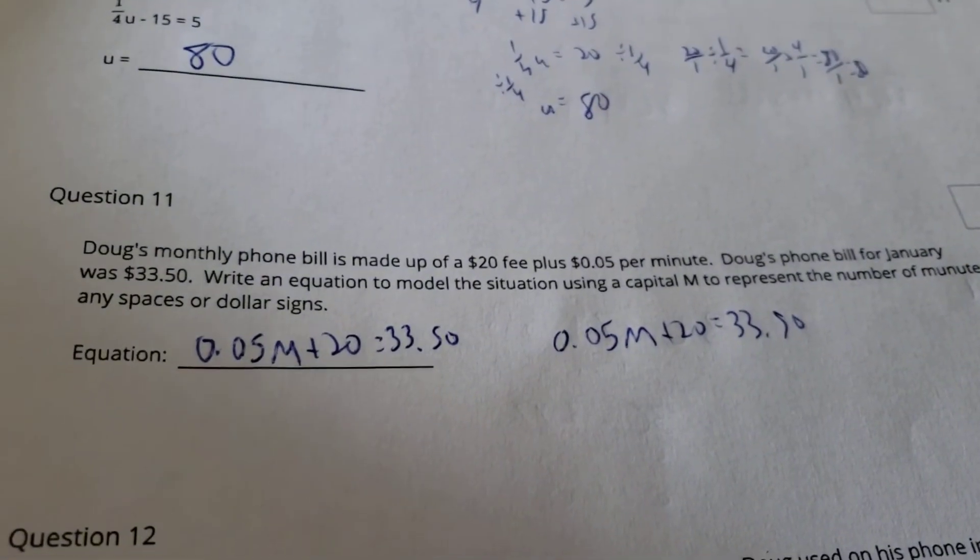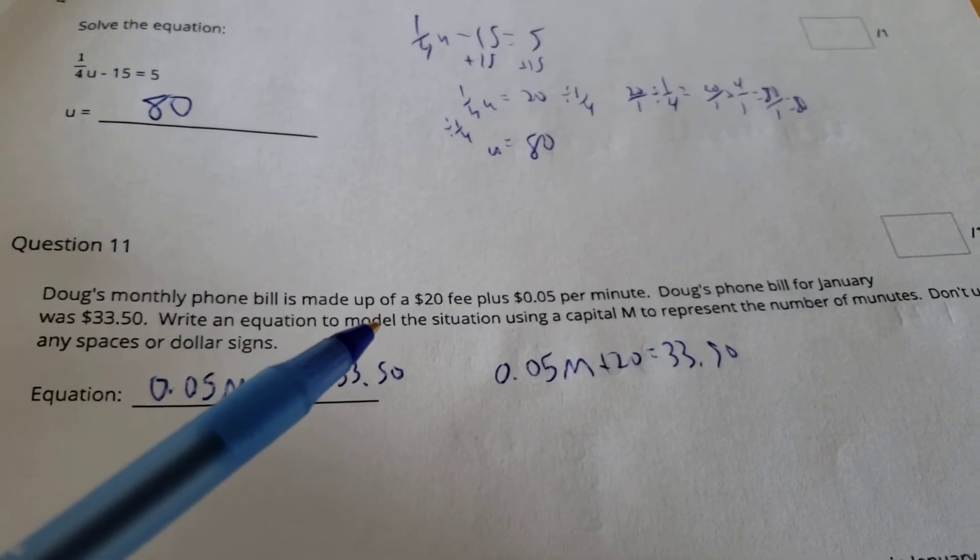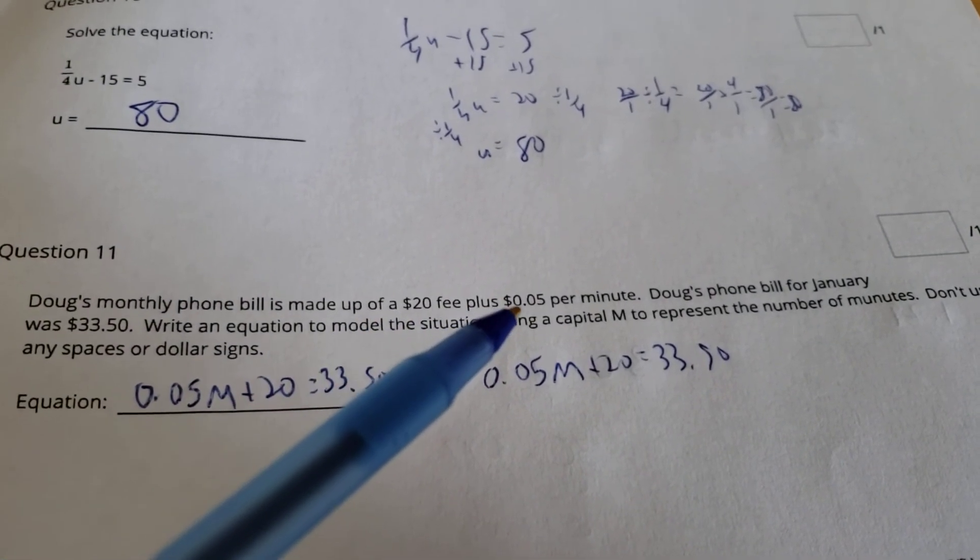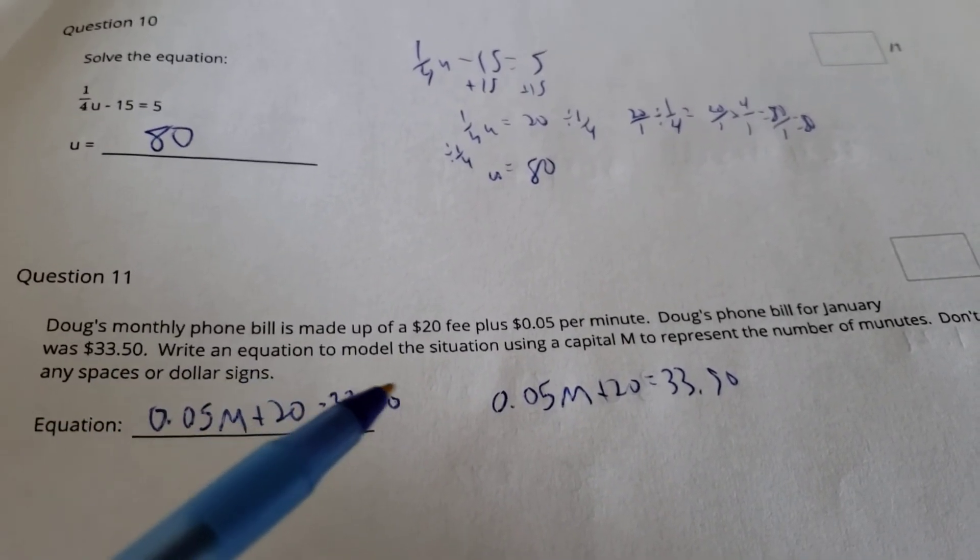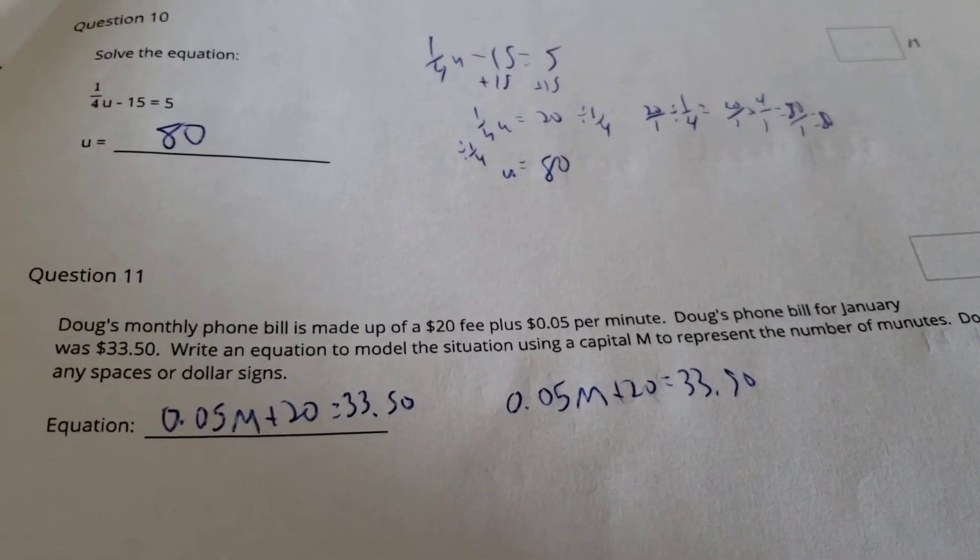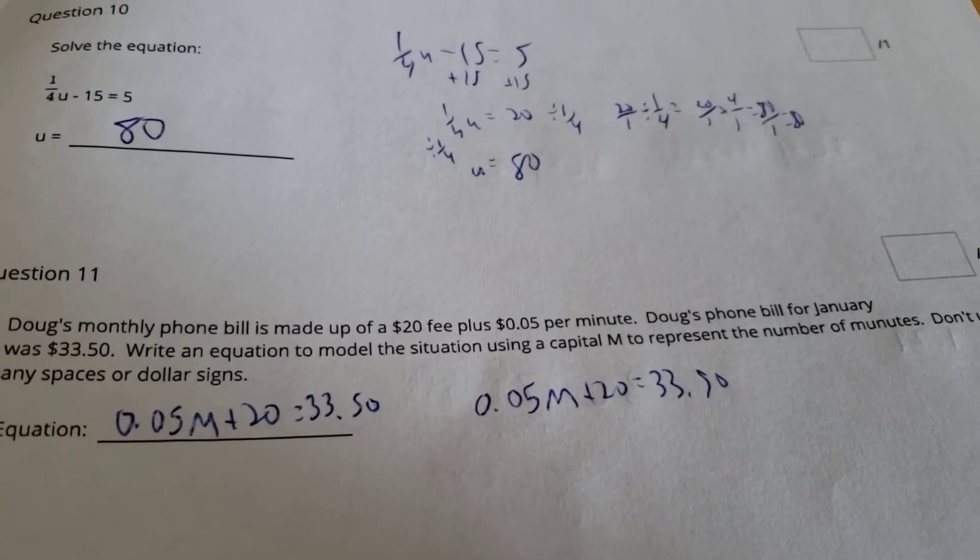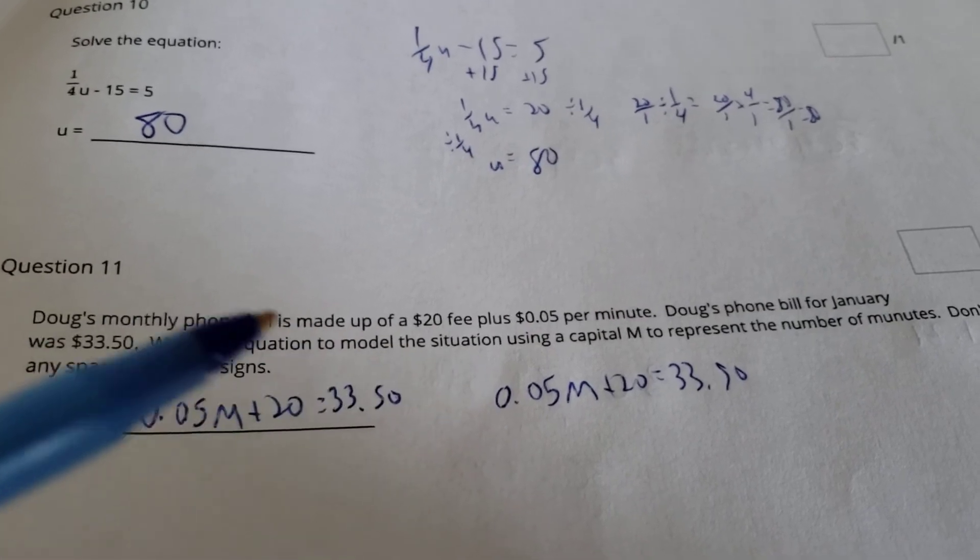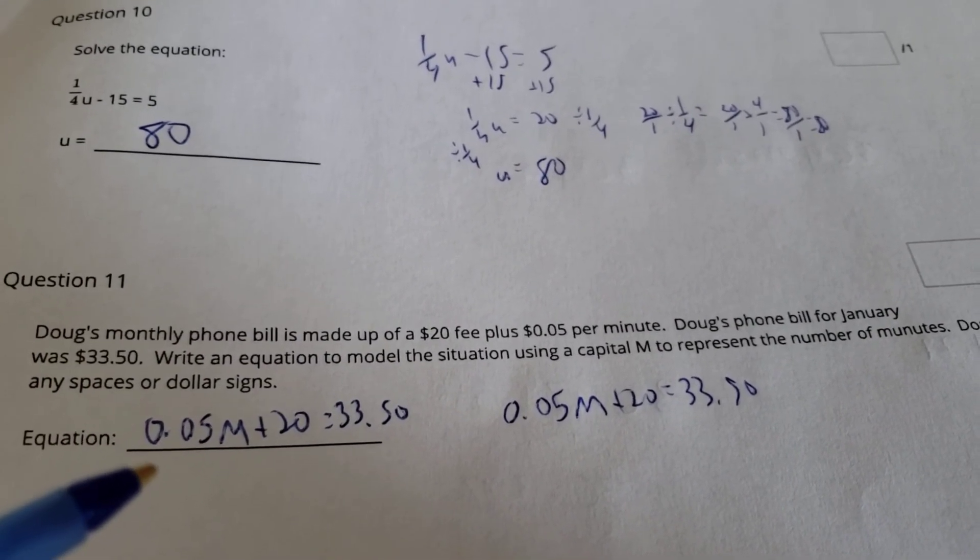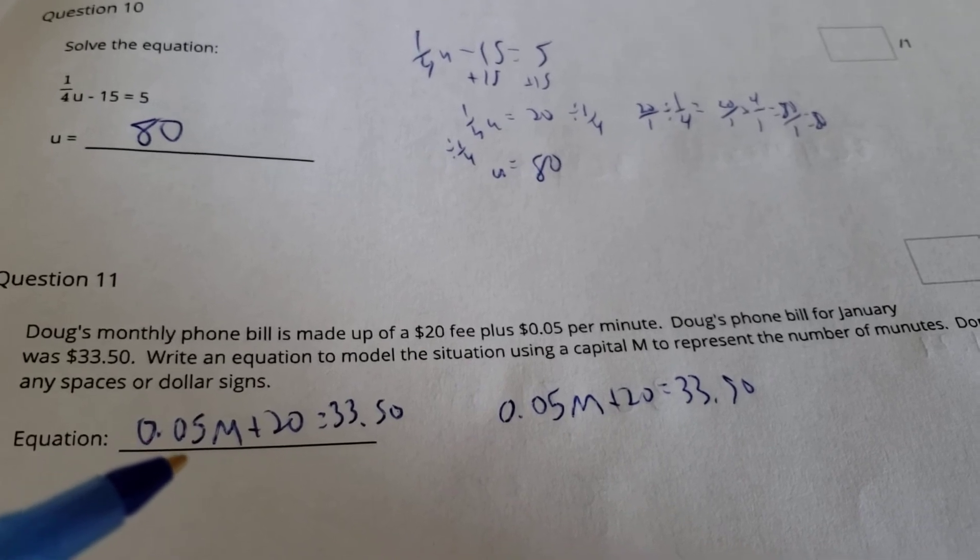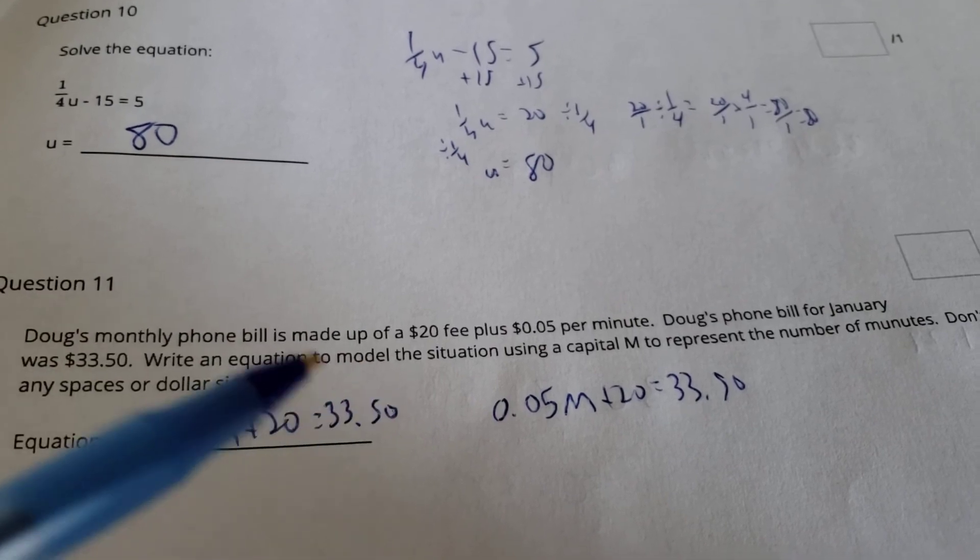Question 11. I'm asked to build an equation here. It said, Doug's monthly phone bill is made up of a $20 fee plus 5 cents per minute. Doug's phone bill for the month of January was $33.50. Write an equation to model the situation. Use a capital M to represent the number of minutes. Remember, don't use any spaces or dollar signs. Well, we know, we try to put the letter first in these scenarios. We don't try to put just the random numbers first. So 5 cents per minute, so 0.05M, plus that $20 fee equals what his bill was for the month.